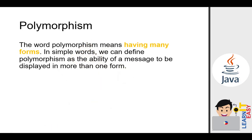Polymorphism — the word means having many forms. In simple words, we can define polymorphism as the ability of a message to be displayed in more than one form. As shown in the picture, polymorphism is the ability of a single message to have different outputs or appearances. 'Poly' comes from two words: 'poly' meaning many, and 'morph' meaning form or shape. In object-oriented programming, polymorphism behaves exactly the same as the example shown.